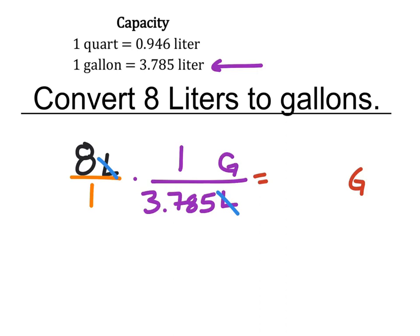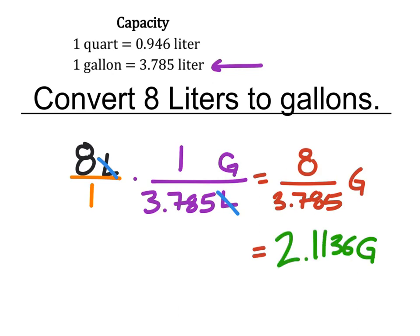By doing the multiplication in the numerator I get 8, and in the denominator I get 3.785. So now I need to divide these, which is going to give me the answer in gallons because that's all that was left. I put this directly into my calculator and I get 2.1136. I'm going to round this to the nearest hundredth, and since that 3 is less than 5, the 1 in the hundredths place stays the same, so it simply is 2.11 gallons. This would be the answer for this problem.